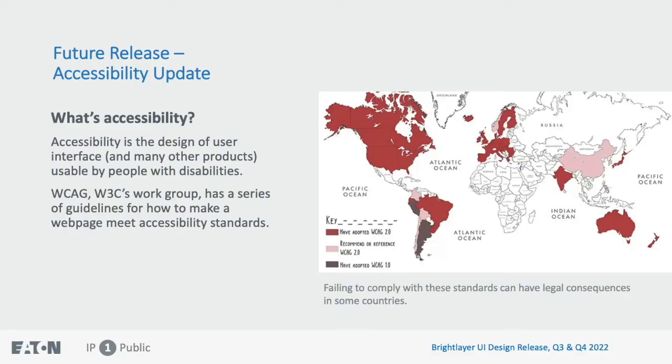Another big upcoming release is our accessibility update. What exactly is accessibility? It is the practice of designing your user interface to ensure that it can be used without major trouble by as many audiences as possible, particularly those users who may have visual or cognitive impairments. WCAG, which is a workgroup under W3C, has a series of guidelines on how to make your web page meet accessibility guidelines. In fact, they are so well-known that many countries — as shown by the map here — are making it a federal government rule that if your product is not meeting the accessibility guideline, then your users have the right to sue you.